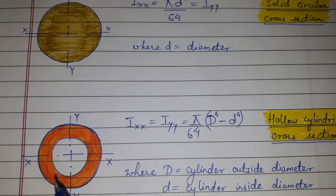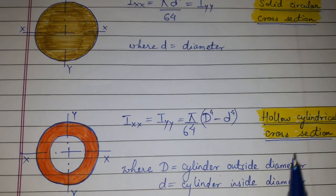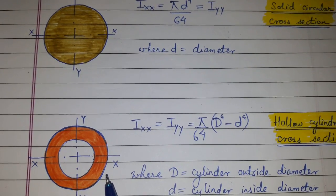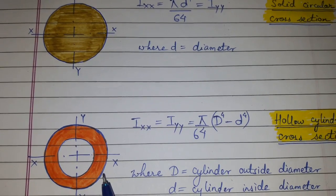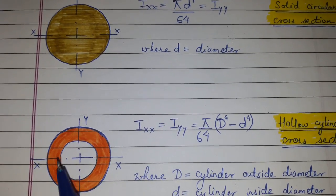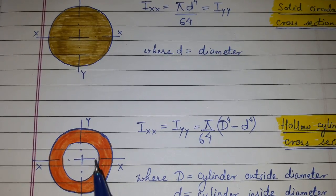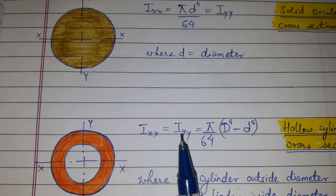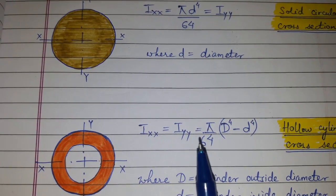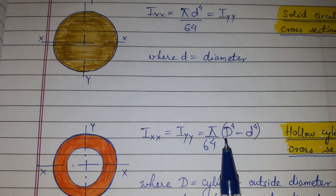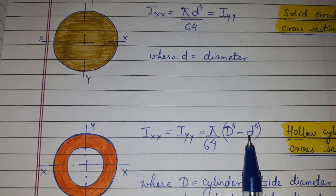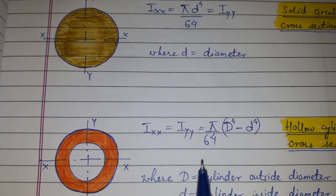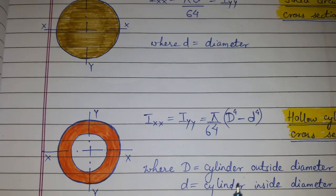And for hollow cylindrical cross-section, where the outer circle of the cylinder has diameter capital D and inner diameter of the cylinder is small d, so Ixx is equal to Iyy equal to π into D raised to 4 minus small d raised to 4 divided by 64, where capital D is the cylinder outside diameter and small d is the cylinder inside diameter.